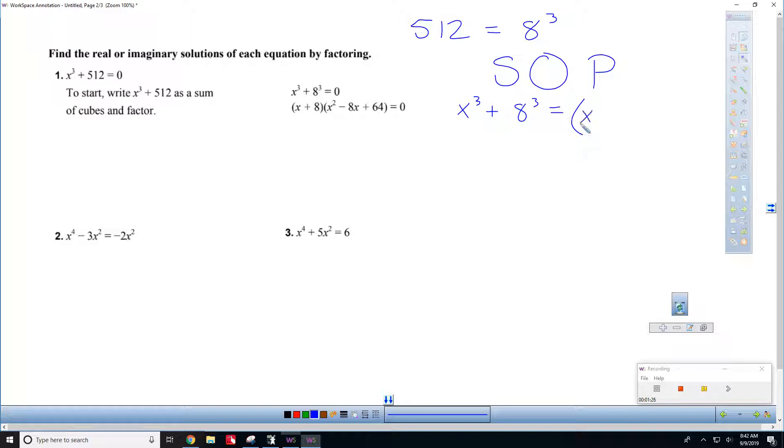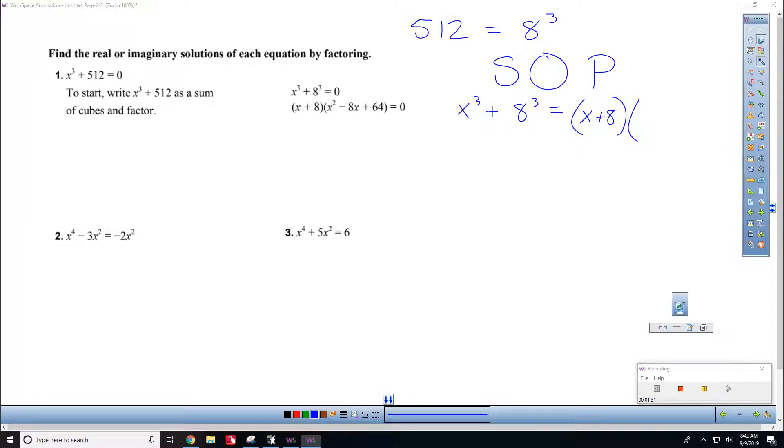You just write the first factor is you keep the sign the same. And then in here, it's going to be opposite, so minus the multiplication of the factors, and then plus 8 squared. So that's where this came from. In case you were wondering, if it's x cubed minus 512, that's equal to x, it's the same, x minus 8 times x plus, opposite.